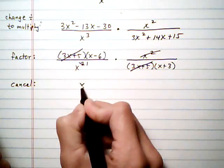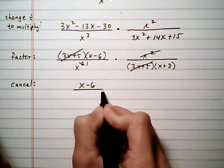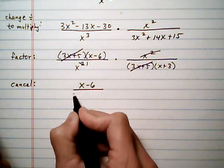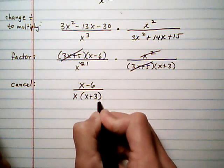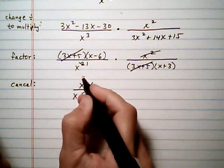So after we cancel, we have x take away 6 over x times x plus 3. And that would be our final answer.